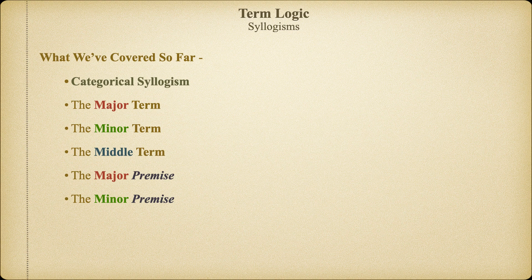All of these parts are essential to understand as we move on to the next section, where we're going to examine what happens when we build categorical syllogisms with different kinds of categorical propositions, as well as what happens when we change the placement or orientation of the middle term in the premises of the argument. Come on back next time, and let's learn some more about categorical syllogisms. See you then.